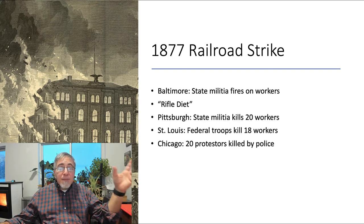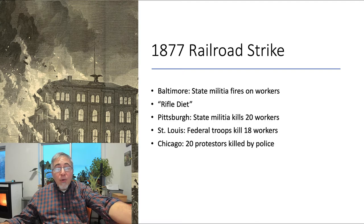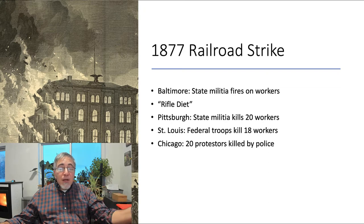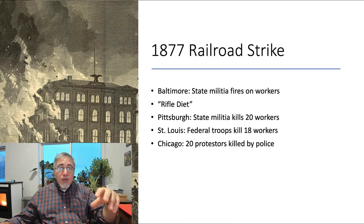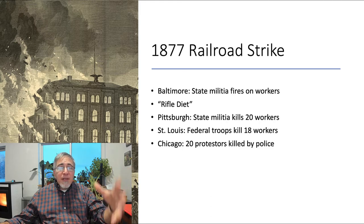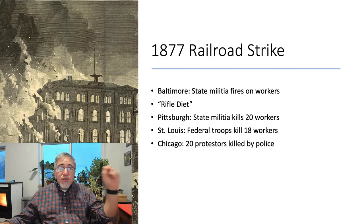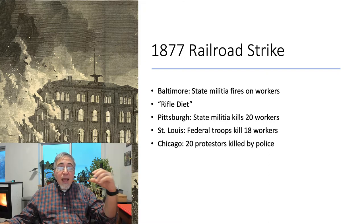The governor of Maryland deployed the state's militia. In Baltimore, the militia fired into a crowd of striking workers, killing 11 and wounding many more. Strikers convulsed towns and cities across Pennsylvania. The wealthy president of the Pennsylvania Railroad, Thomas Andrew Scott, who had been Assistant Secretary of War for Abraham Lincoln, is often listed as one of the first robber barons of the Gilded Age. Scott suggested that if striking workers complained that they were hungry, then they should be given what he called a rifle diet for a few days and see how they like that kind of bread.